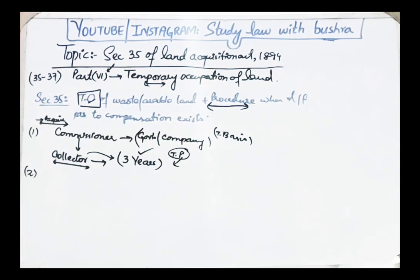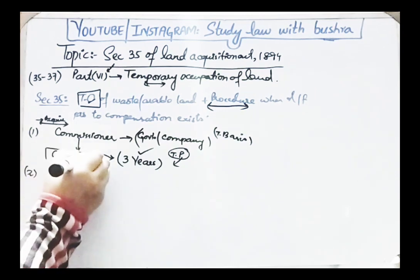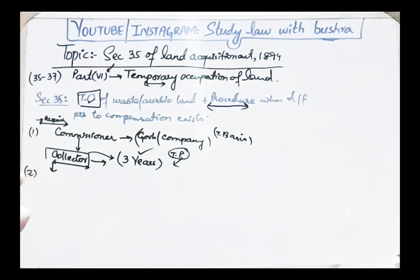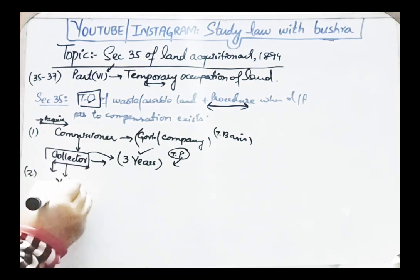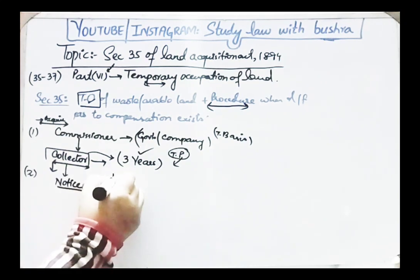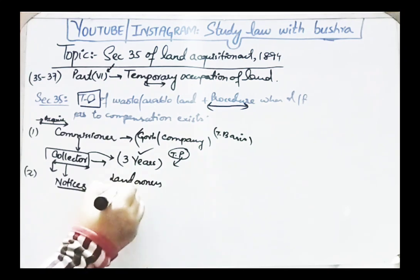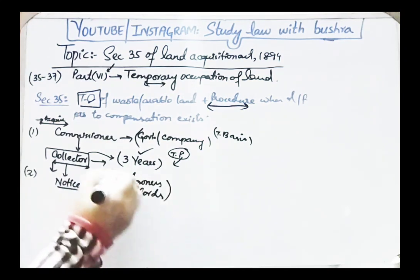Section 35 Clause 2 states: 'The Collector shall cause public notice of the substance of the direction to be given at convenient places in the locality in which the land is situated. Thereupon it shall be lawful for any officer either generally or specially authorized by the Collector, and for the servants and workmen of such officer, to enter upon and survey and take the levels of any land in such locality.' Once the Collector receives notice, he will first survey the area.